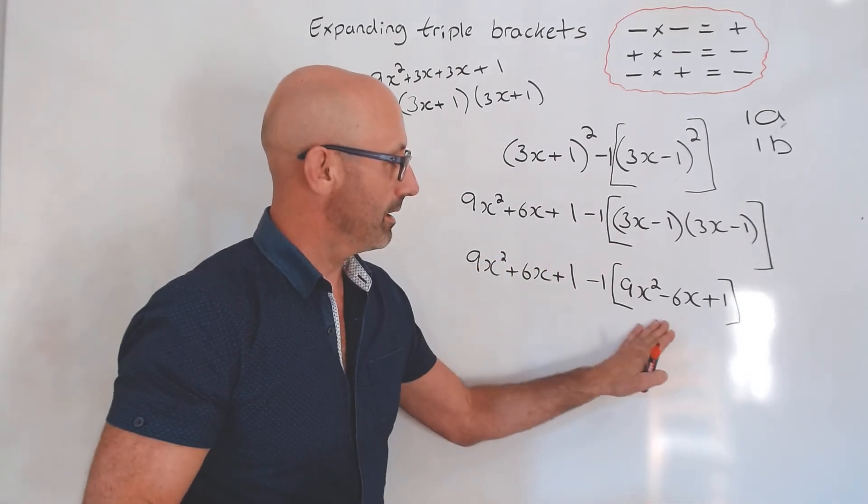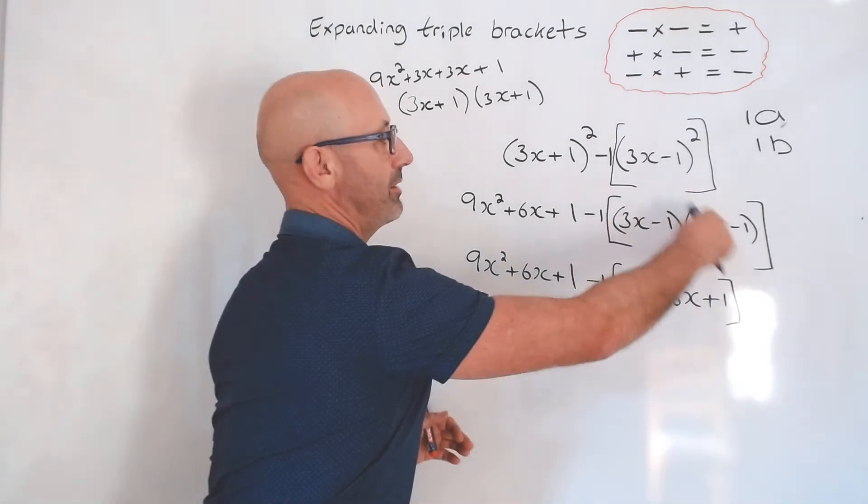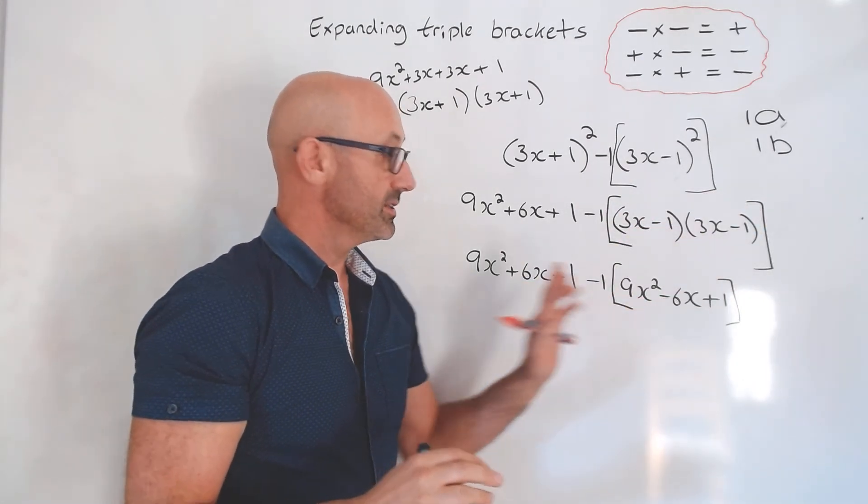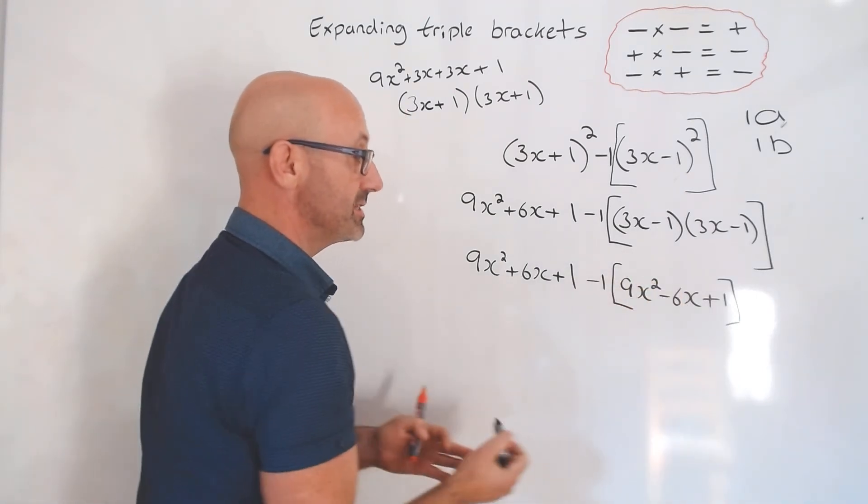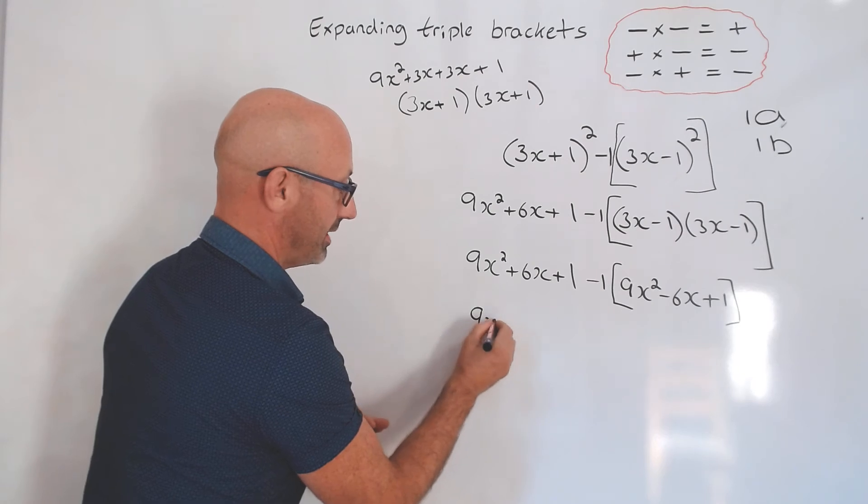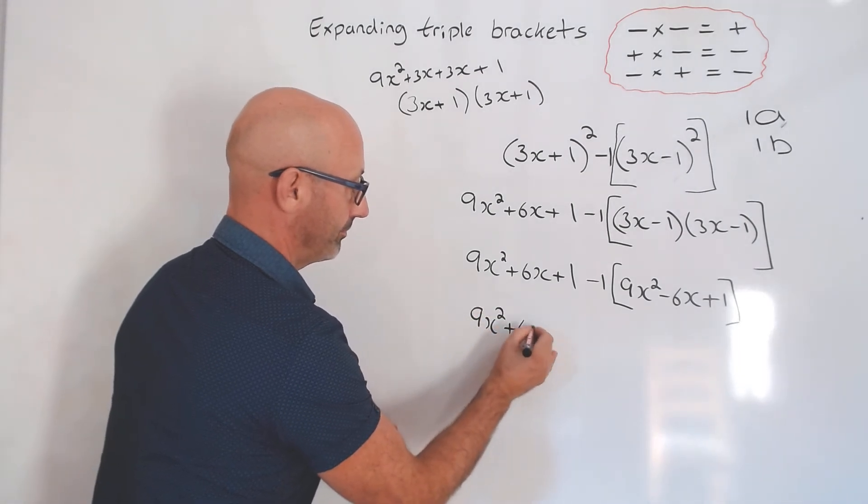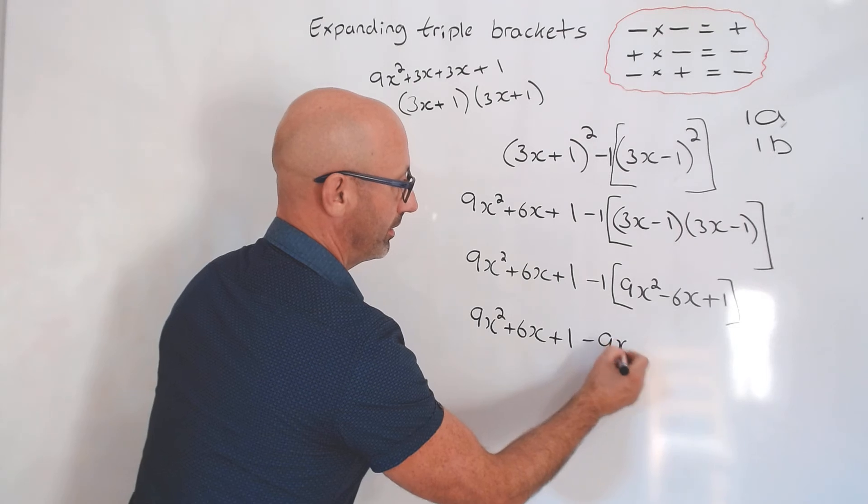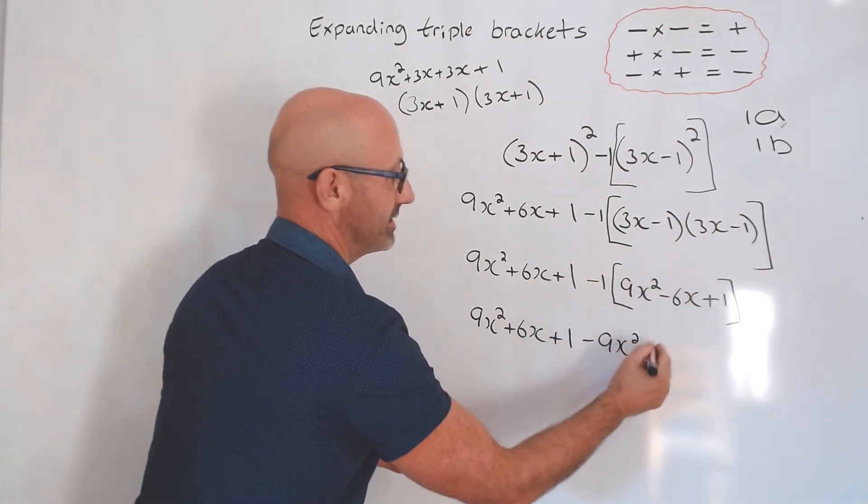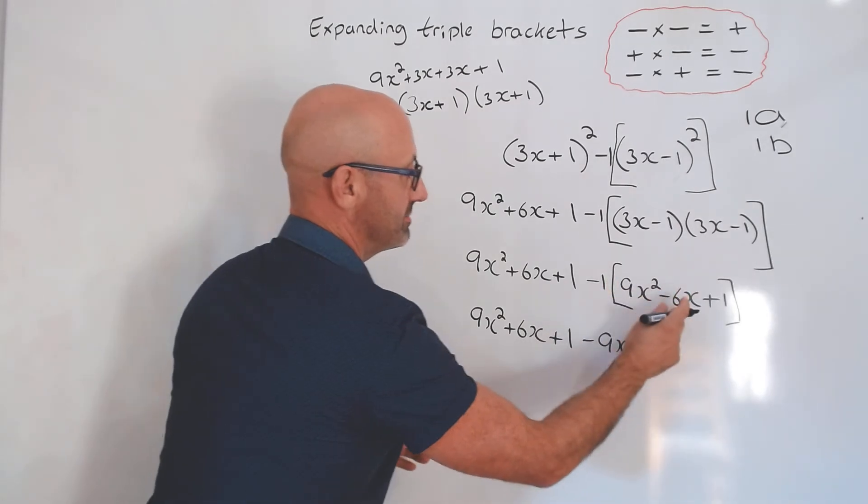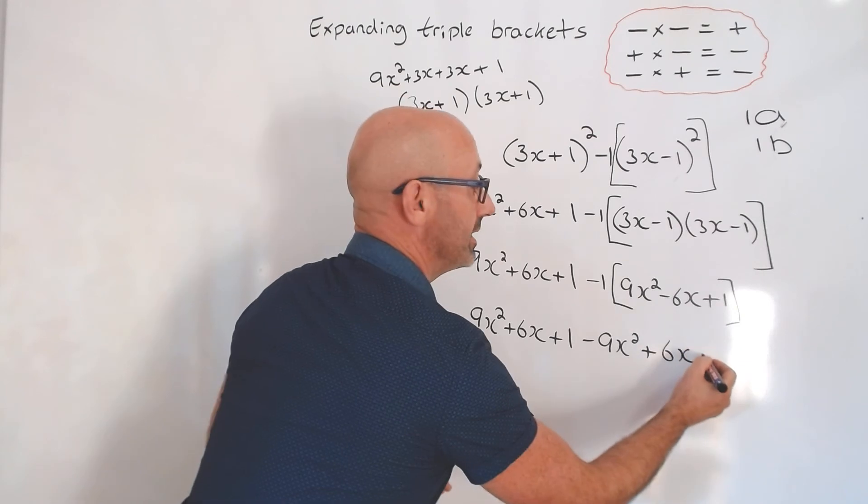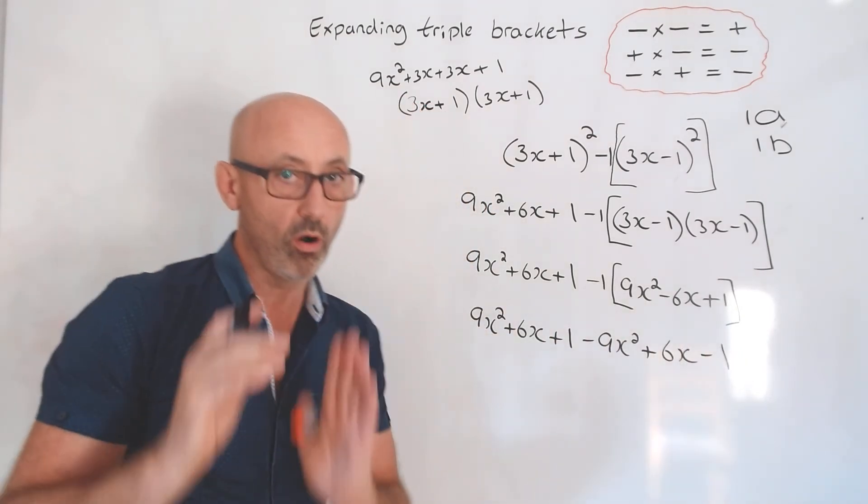If we expand this bracket here, we're going to end up with 9x squared. It's going to be minus 3 times minus 3x, that's minus 6x, plus 1. Be very careful, go through it step by step with this bracket here. Now is the crucial part. We're then going to times each bit by minus 1. That times that is that, minus times minus is plus, 1 times 6x is 6x, minus 1 times 1 is minus 1.